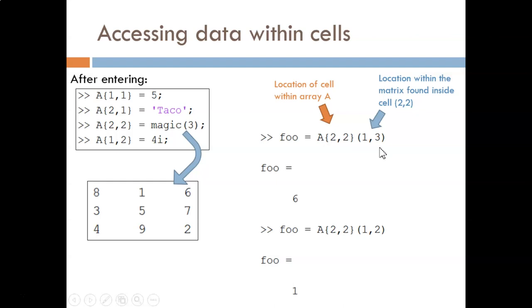In our analogy, this is like driving to the correct bank, then opening the correct safety deposit box, and then picking out just one item from that box. The second example shows almost the same thing, but just choosing a different value from the matrix. Remember, curly braces tell you which cell, and parentheses tell you which index in a matrix.